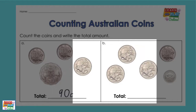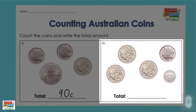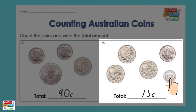Let's move on to question B. Pause the video now and count the collection of coins. Let's see if you counted it correctly: 20, 40, 60, 70, 75 — 75 cents.